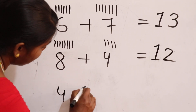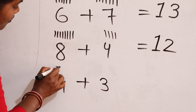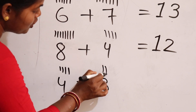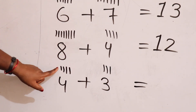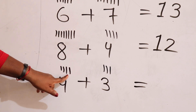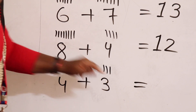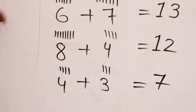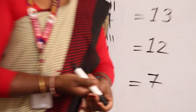4 plus 3. 1, 2, 3, 4. 1, 2, 3. Count the lines: 1, 2, 3, 4, 5, 6, 7. Answer is 7. Thank you, students.